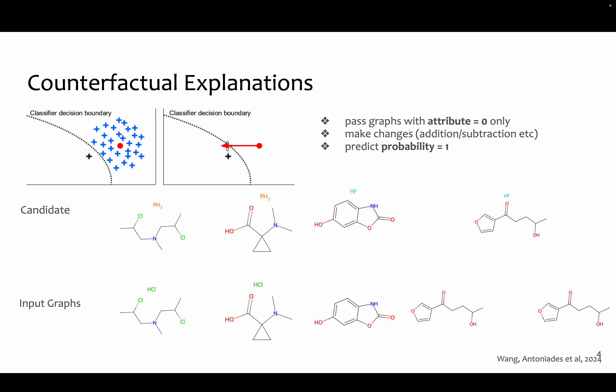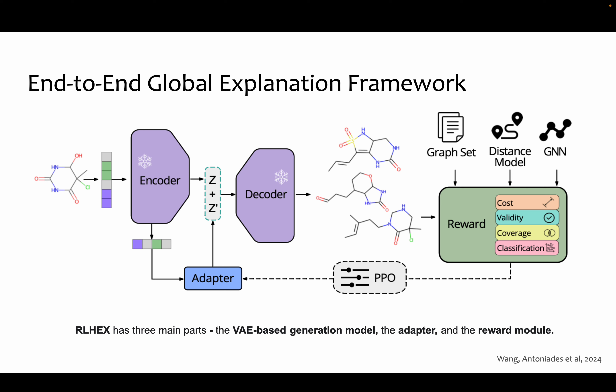In our setting, we have some kind of candidate molecule and then we try to make changes on that molecule to see whether the classifier changes its prediction. We built an end-to-end framework called RLX, comprised of a VAE generation model, an adapter, and a reward module that end-to-end optimizes our generation model to generate these counterfactual minimal explanations.